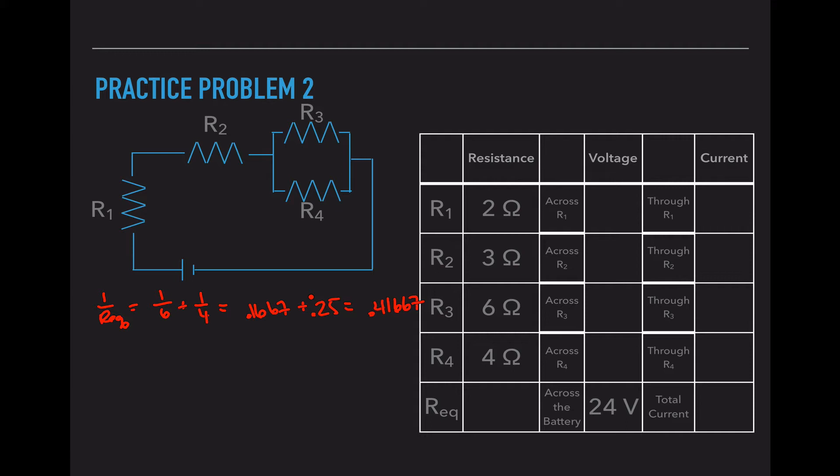Now, since that is not just the REQ, that is 1 over REQ, we do have to take the inverse. And if we were to replace those two resistors, we would need a resistor with a value of 2.3. Now I need to do the regular REQ. 2 plus 3 plus 2.3 equals 7.3 ohms. So my equivalent resistance of that entire circuit is 7.3 ohms. Now I go back to V equals I times R. I have 24 volts from the battery. My REQ is 7.3. 24 divided by 7.3 is 3.29.